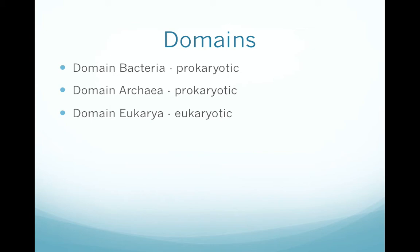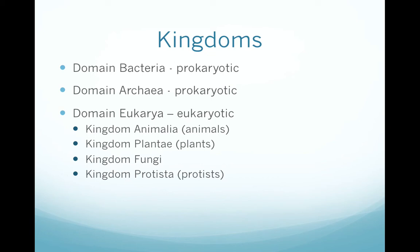There are four kingdoms within domain Eukarya. Kingdom Animalia includes all the animals, which are creatures that are motile for at least part of their life and cannot make their own food. This includes insects, birds, mammals, reptiles, amphibians, and more.